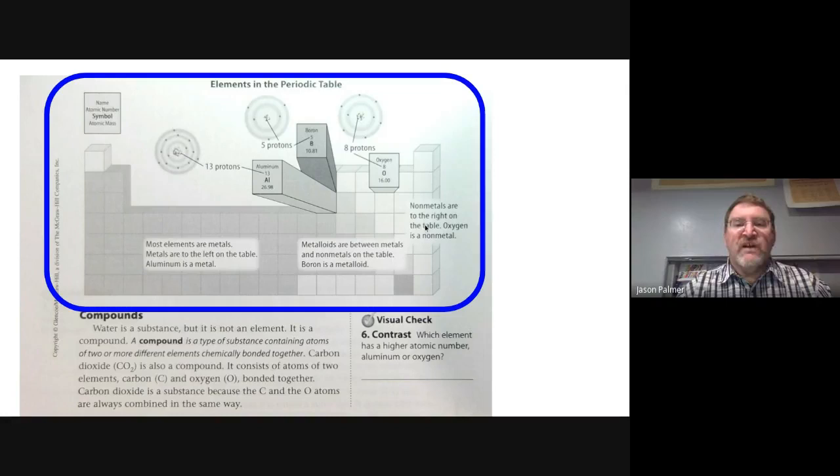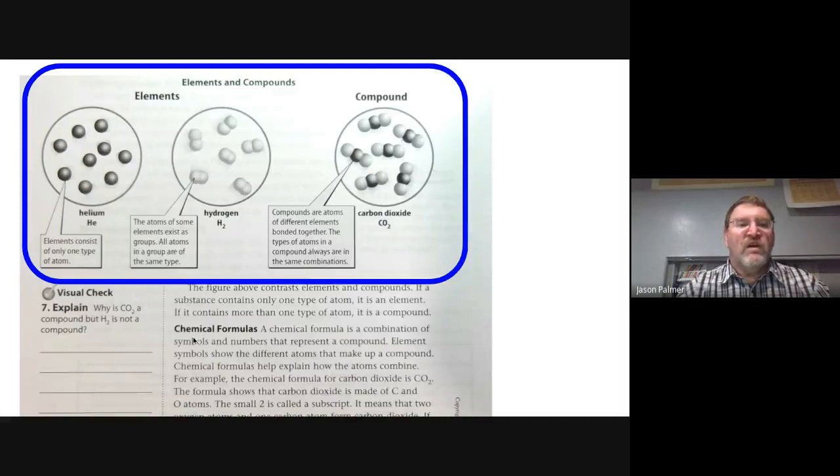So this is 17. And then the last one is group 18. And those all have eight outer electrons except for helium, which just has two because it has two protons.